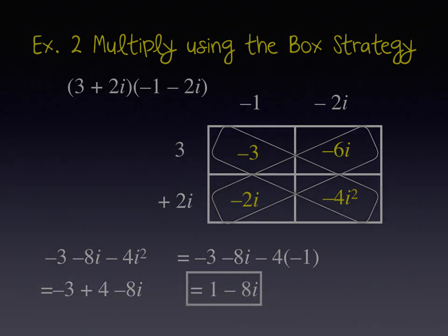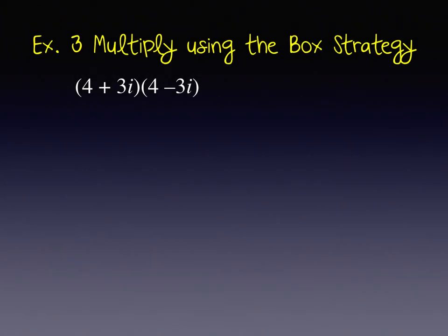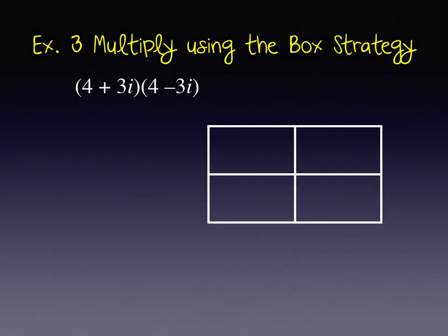Now we have one more example and this is a special case. What's special about this is you'll notice that we have what looks like the difference of perfect squares. When we used to do x minus y times x plus y and we had a special polynomial product, same thing with complex numbers. This will be a special product as well. 4 plus 3i can go along this side and 4 minus 3i along the top.